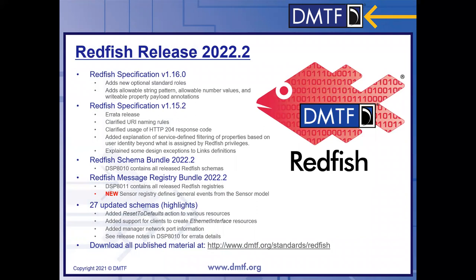The first part of that set of deliverables is the Redfish specification. There were two different documents released. First is an errata version, version 1.15.2. That clarified some rules around URI naming, also some clarifications around the use of the HTTP 204 response codes, and some additional explanations around how properties get filtered either at the property or at the resource level based on Redfish privileges infrastructure.